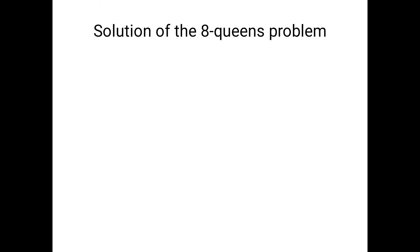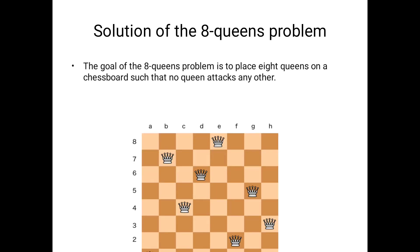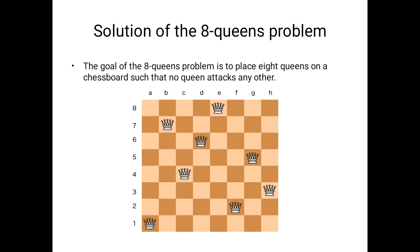Now we see the correct solution. The goal of the eight queens problem is to place eight queens on a chessboard such that no queen attacks any other. In this correct solution, no queen attacks any other queen. This is one possible solution — there are many valid solutions. This is just one of them, so please try to find other solutions as well.